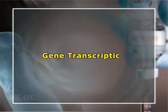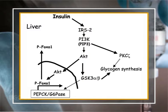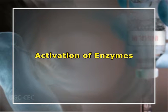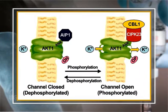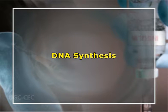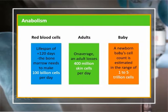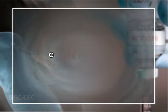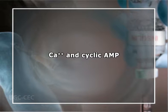The final effects of insulin signaling may be any of three: (1) Gene transcription — insulin acts at the transcriptional level to regulate synthesis of more than 100 proteins, effected through IRS-2. (2) Activation of enzymes — insulin activates existing enzyme molecules by covalent modification (phosphorylation or dephosphorylation); more than 50 enzymes are activated by this mechanism. (3) DNA synthesis — through the IRS-1 pathway, insulin increases DNA synthesis, cell growth, and anabolism. Intracellular mediators implicated in insulin action include calcium ions and cyclic AMP.